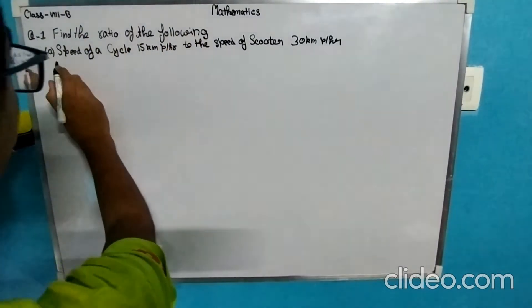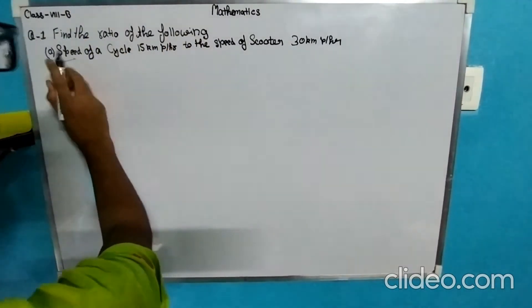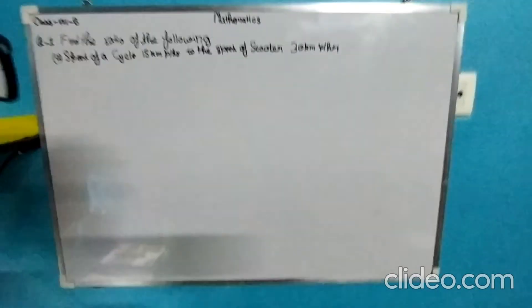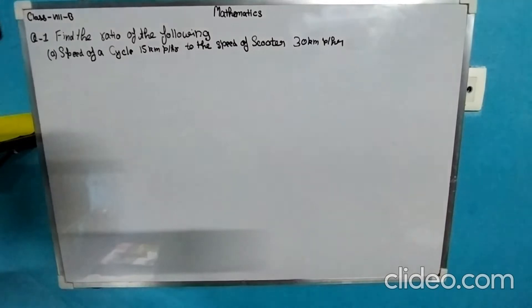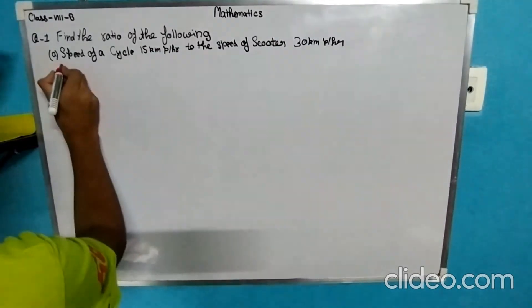The first part is: speed of a cycle is 15 km per hour, and the speed of the scooter is 30 km per hour. First we will highlight the values which are given here.